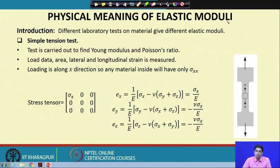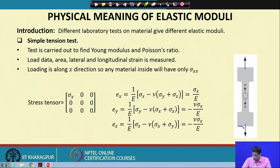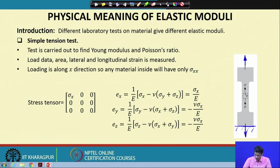An isotropic material can be characterized by two material constants: E (Young's modulus) and ν (Poisson's ratio). If we simply test a specimen under tension — applying a tensile force on both sides, or fixing the bottom and applying tensile force — then any element in the specimen will be under only one-directional stress.